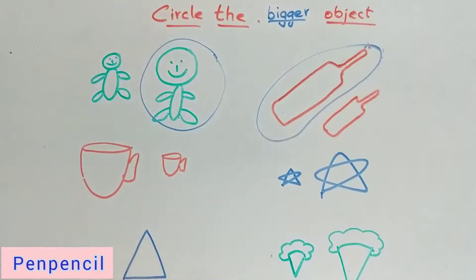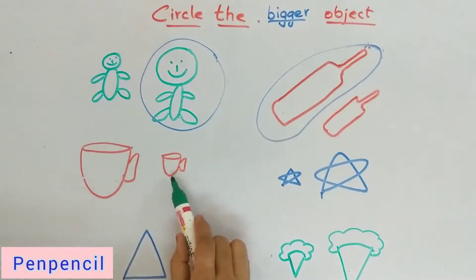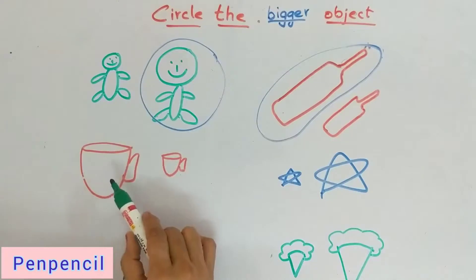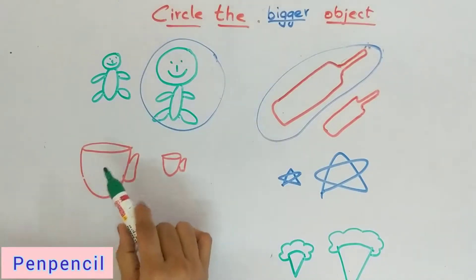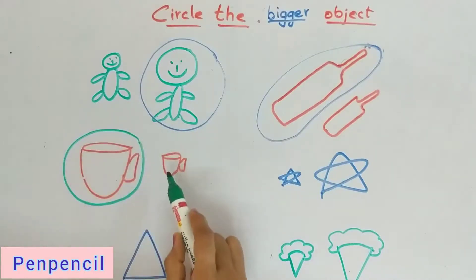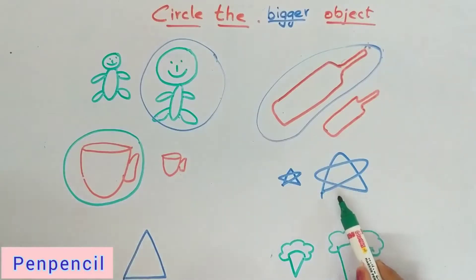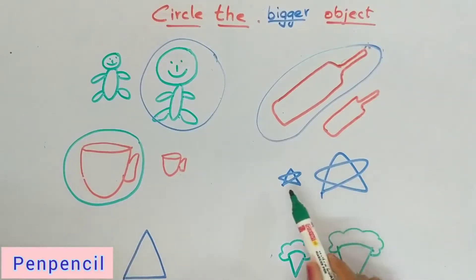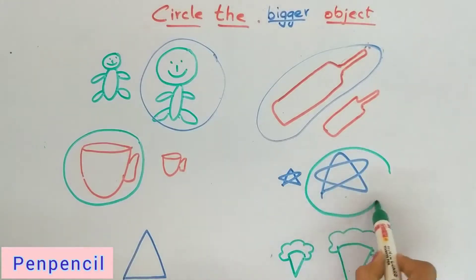Now come on, tell me what we have to circle for the next one — this cup or this cup? Yes, correct — this one. This is a bigger cup, this is a smaller one. Now, in this one, which is the bigger one? Yes — this one, this is a bigger star, this is a small star.